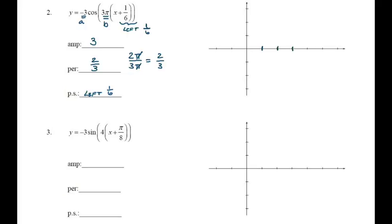There's no vertical shift — nothing added or subtracted at the end of the function. I'll break up my x-axis with four lines, the fourth being the end of one period at 2/3. Half of that is 1/3, and half again gives my first line at 1/6. So my x-axis counts by 1/6: 1/6, 1/3, 1/2, then 2/3 for one full period. My y-axis needs a maximum of 3 and a minimum of negative 3. To shift left 1/6, since each line is 1/6, I put a vertical dotted line at negative 1/6 to start graphing.